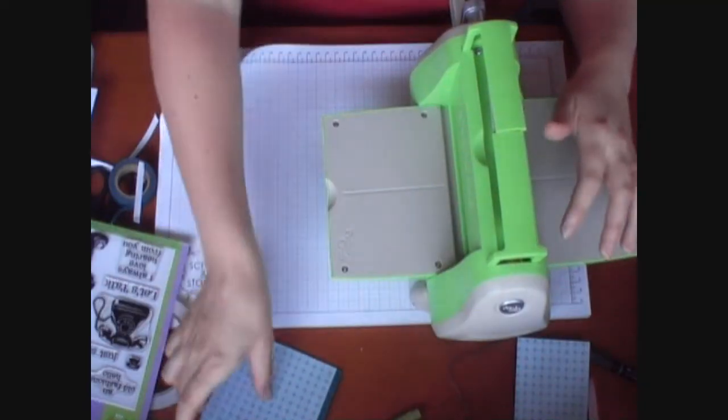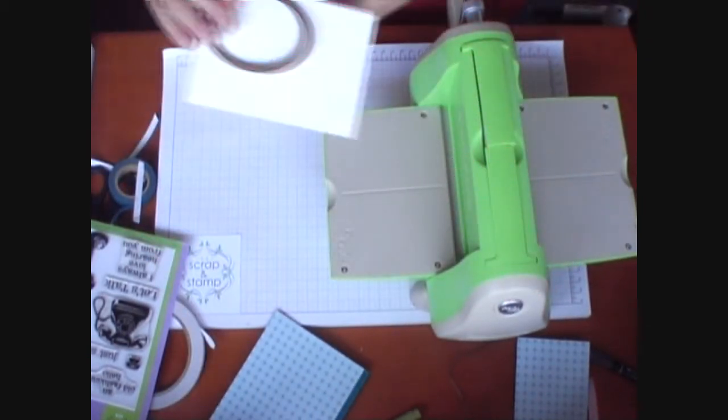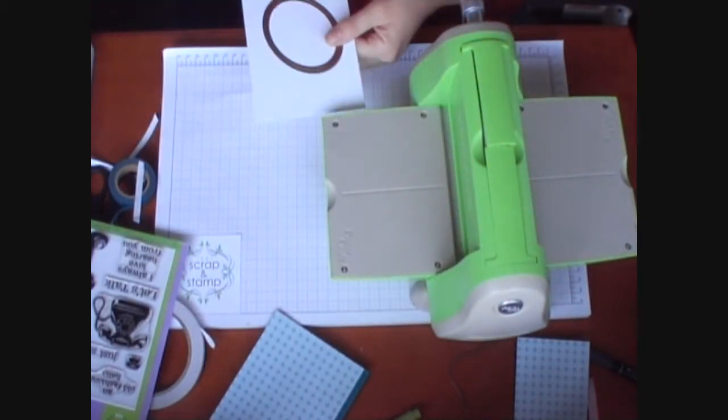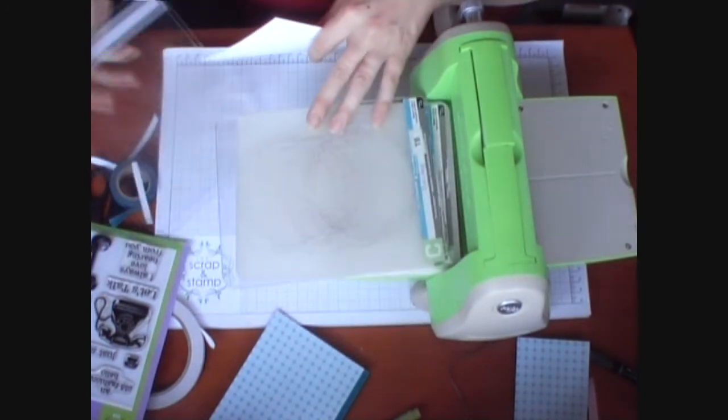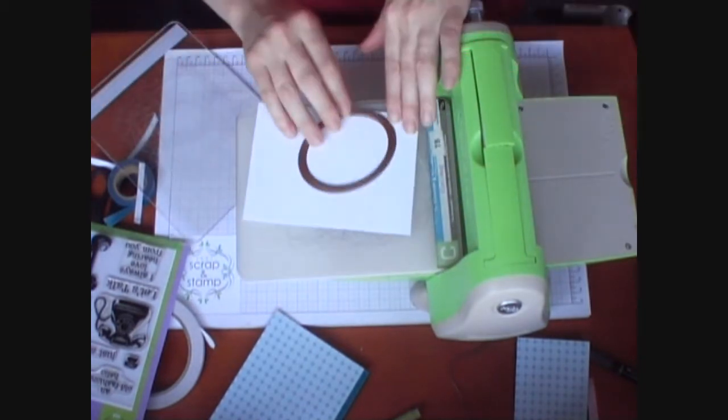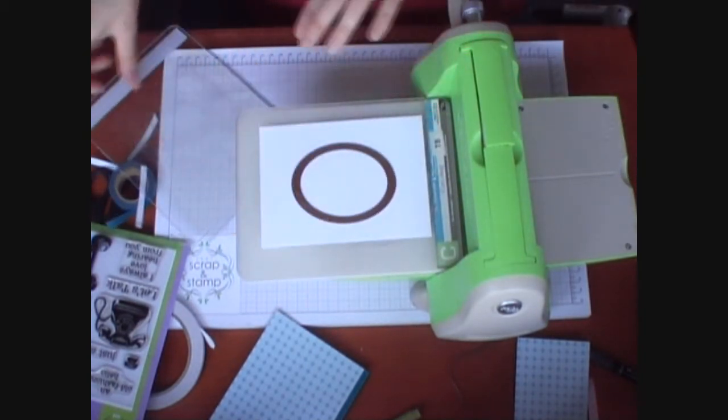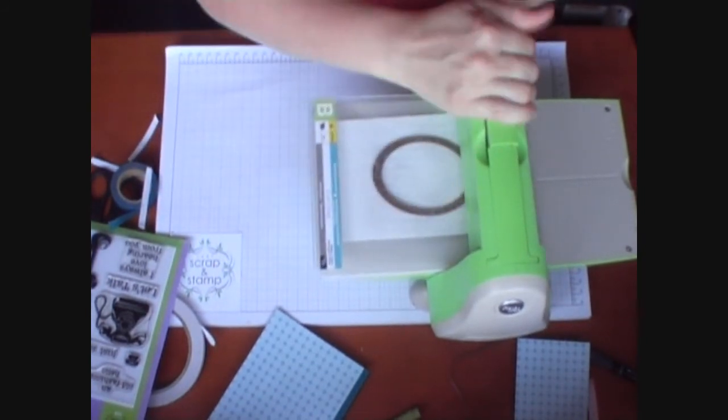Now that we've made the bones of our little book we're going to make a little plate to put on the front. So I'm just going to use a piece of white card stock and some Spellbinder dies. And I've got my A plate and a C plate, and then the material will be cutting, and then my B plate on the top. I'll just run that through.